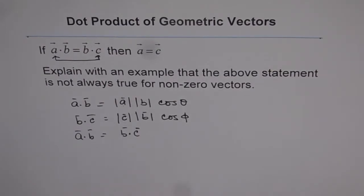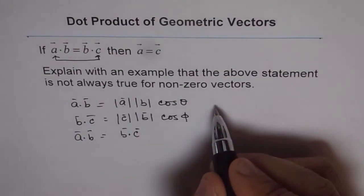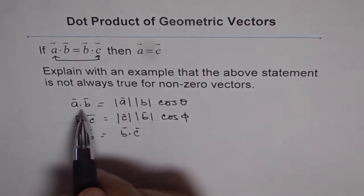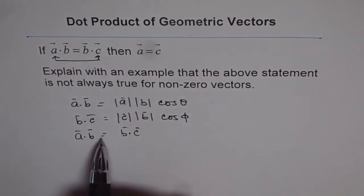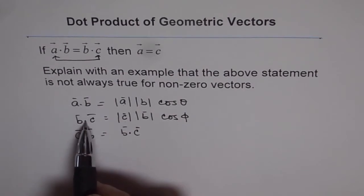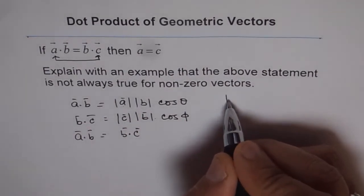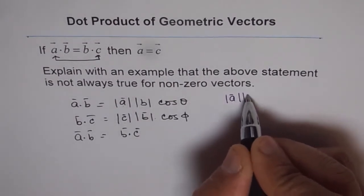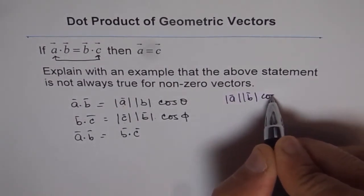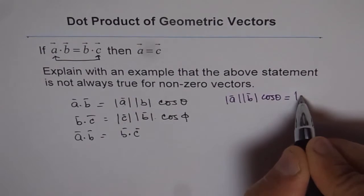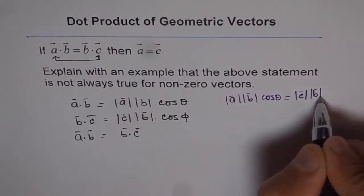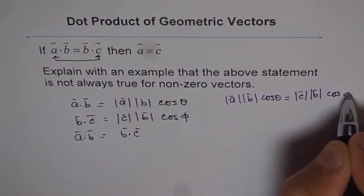So let me equate it on this side so that you understand. So we are saying that A dot B equals B dot C. That means these two things are equal. That means magnitude of A times magnitude of B cos theta equals magnitude of C times magnitude of B cos phi.